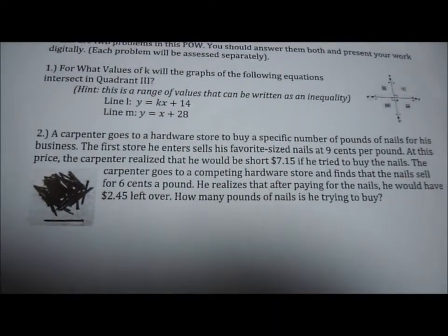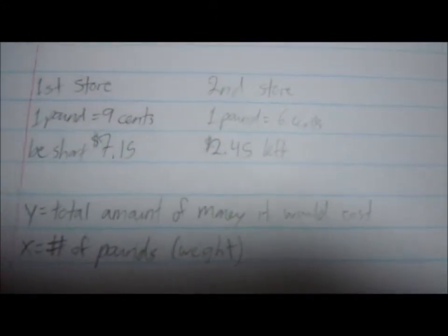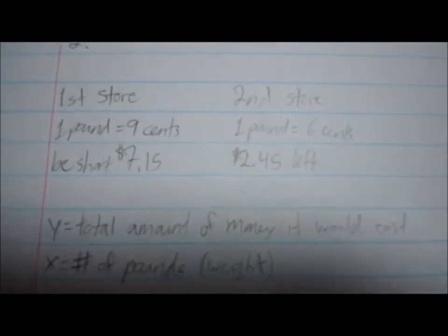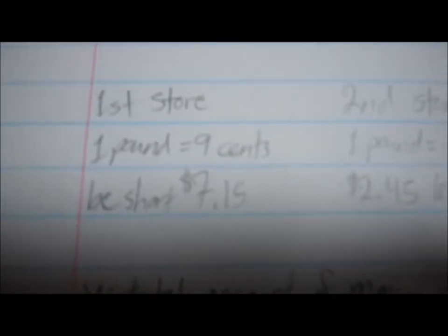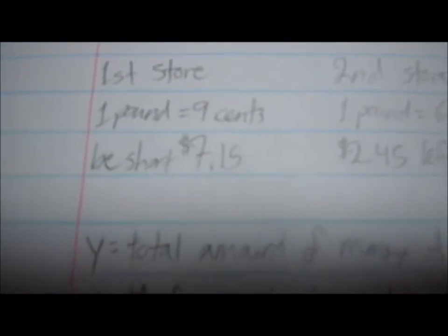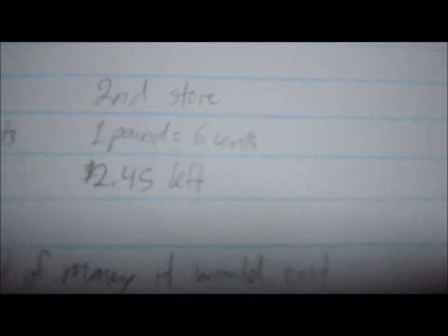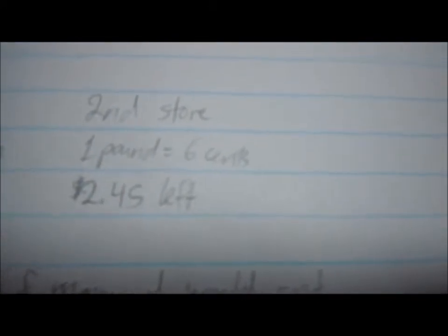The second problem I'm going to be talking about is number 2 on algebra problems of the week. So the first thing I did was trying to organize it. So the first store, 1 pound equals 9 cents and the carpenter would be short by 7.15 dollars. And the second store, 1 pound equals 6 cents and the carpenter would have 2.45 dollars left.